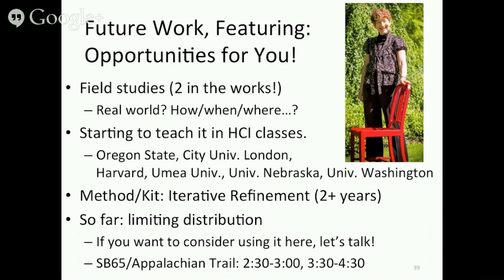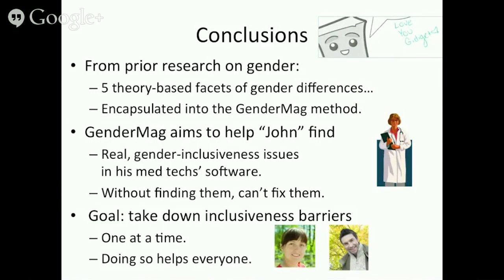I'm going to be available in the Appalachian Trail conference room from 2:30 to 3 and 3:30 to 4:30, so please feel free to come by and talk. Conclusions: you've seen the five theory-based facets encapsulated into this method. GenderMag aims to help John find real gender-inclusive issues in his software. The goal is to take down inclusiveness barriers one at a time, because it's been our experience that doing so helps everyone. I'm open for questions.